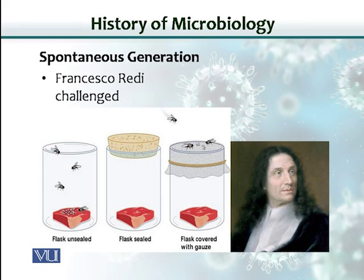Francesco Redi discredited the spontaneous generation theory. He did a famous experiment where he put meat in different jars — some were left open, some were sealed. He concluded that jars that remained covered and didn't allow flies to lay eggs inside remained clean, with no life present.